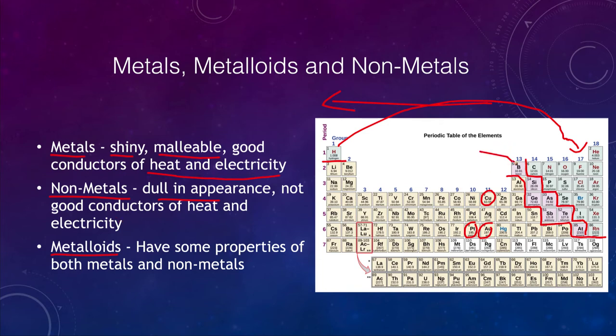In between, in the pink here, are the metalloids, and these have a cross in properties between the metals and the non-metals. You can see they're sandwiched in between these two, between the metals which are on the left hand side and the non-metals on the right, and then going diagonally down are the metalloids.